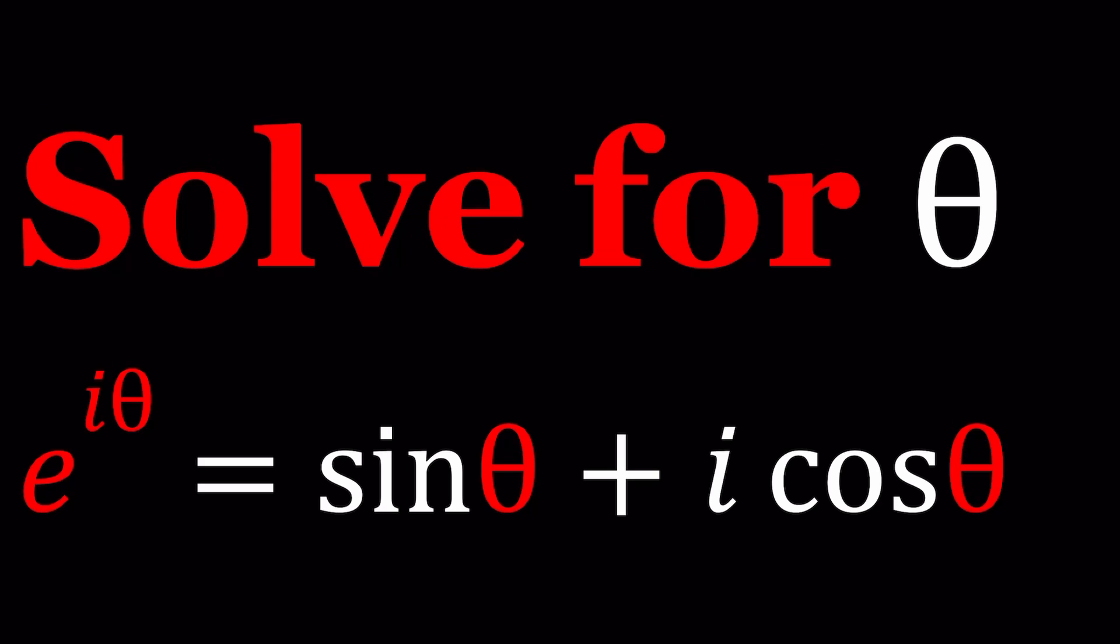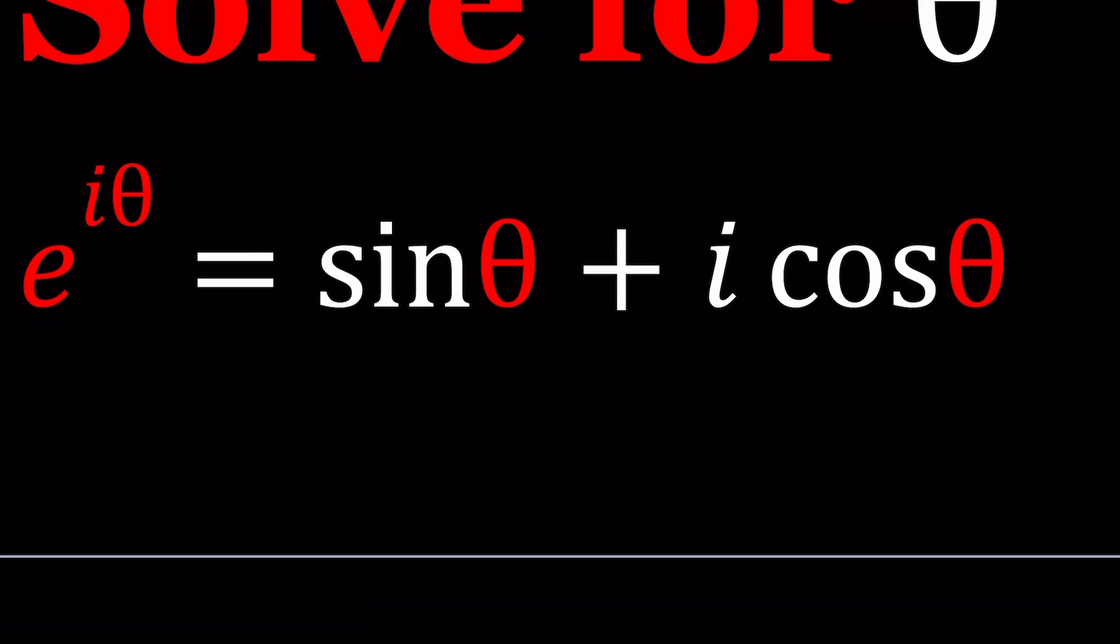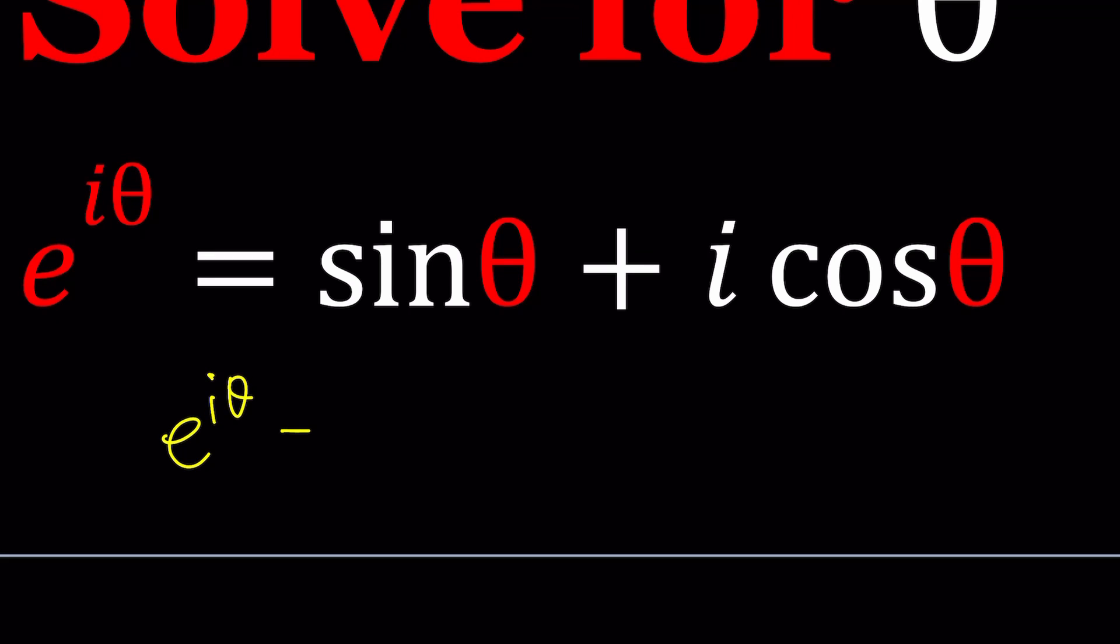Before we get started, I want to tell you the original version of this problem was a little different. It was e to the i theta equals sine theta minus i cosine theta. I don't know why I thought of this problem, and when I checked it out, it did not really come up with a good solution.